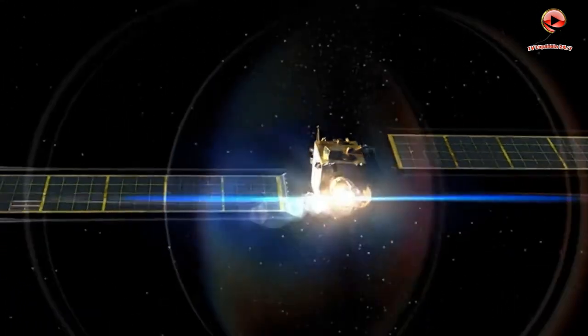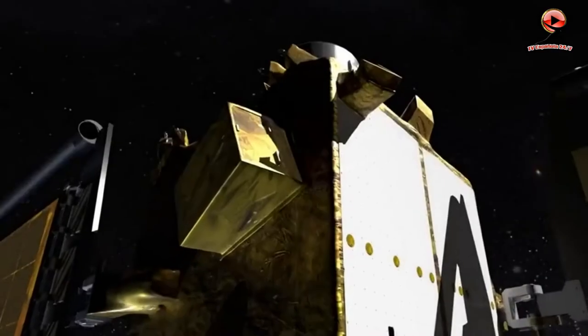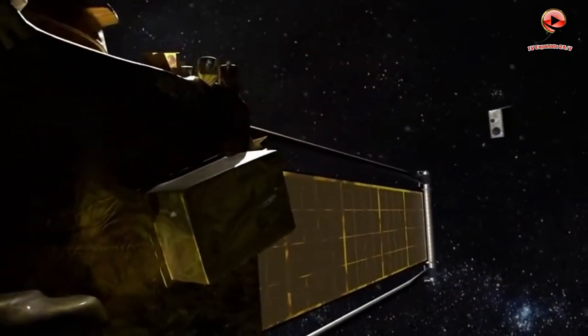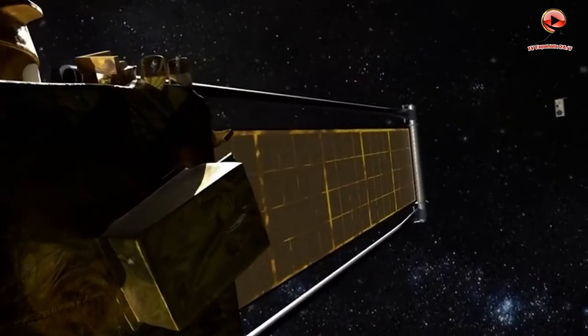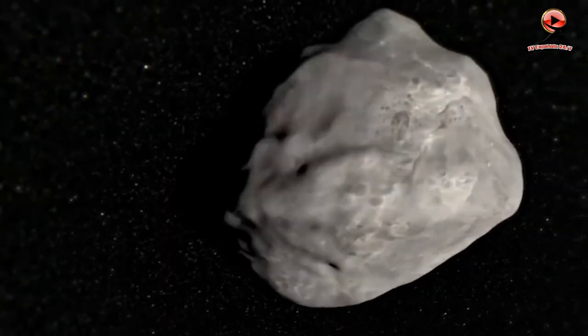Near-Earth objects are asteroids and comets with orbits that place them within 30 million miles of Earth. Detecting the threat of NEOs that could potentially cause grave harm is a primary focus of NASA and other space organizations around the world.